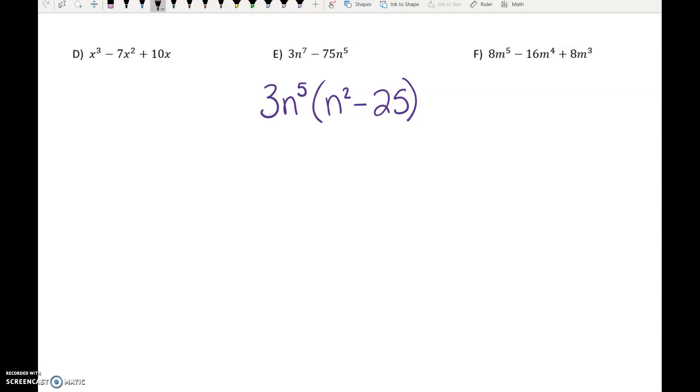On your Big Ideas math assignment, if they use n's or m's or z's or y's, you do need to make sure that you use the same letter. So if you think that your answer is correct and it doesn't work, check your letter and make sure you've got the correct letter in there. n squared is the perfect square of n, 25 is the perfect square of 5. So that part factors into n plus 5, n minus 5. That's the difference of two squares.